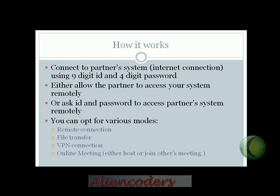How it works: you just need to download it, install it, and then connect to the partner system, but an internet connection is required. The user ID will be a 9-digit number and the password will be 4 digits, which you can change for your convenience. You can either allow a partner to access your system remotely or ask for their ID and password to access their system. You can opt for various modes while connecting — remote connection, file transfer, or VPN.